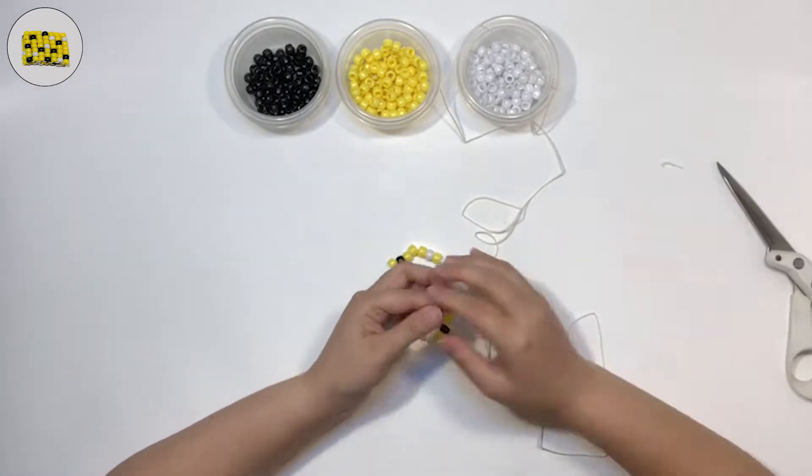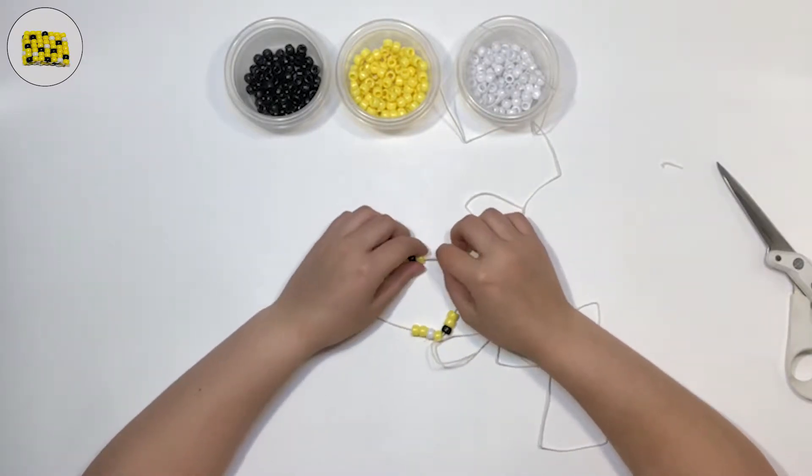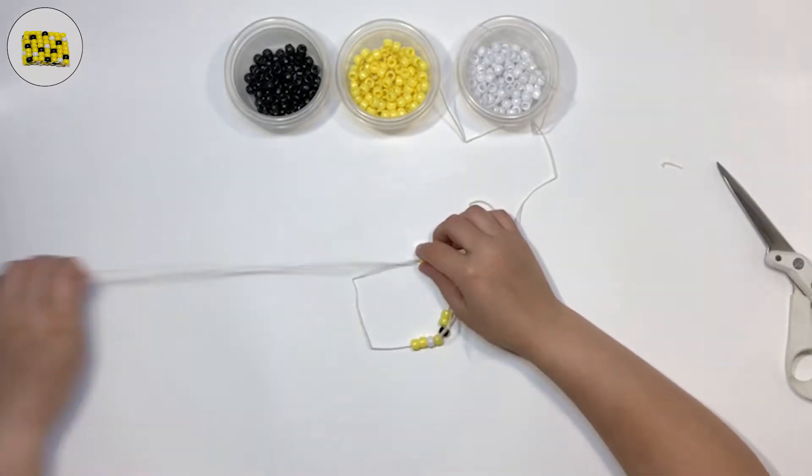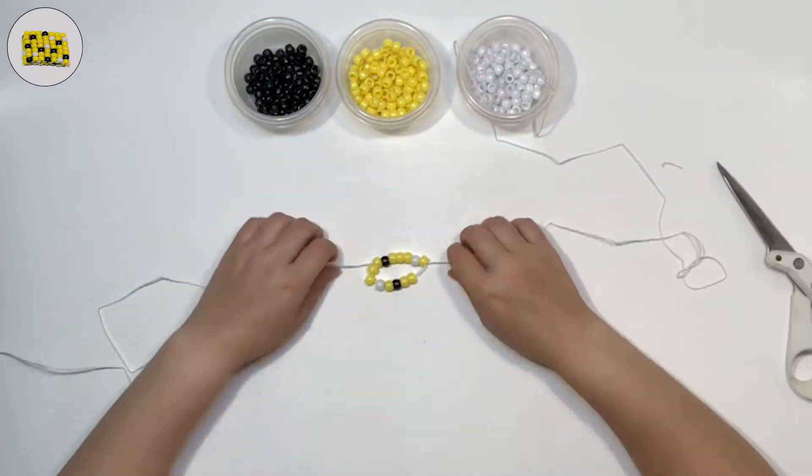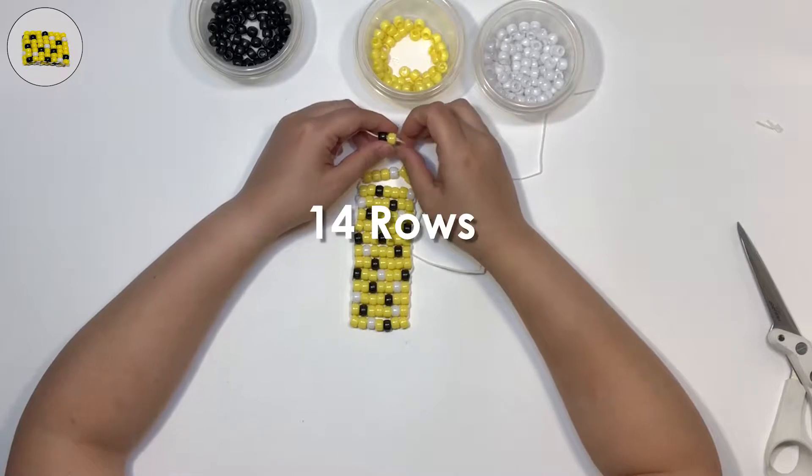Take one end of the string and feed it through seven beads and pull to make two rows. If your beads aren't centered on the cord, now is the time to fix them. Keep adding rows of seven until you have 14 different rows.